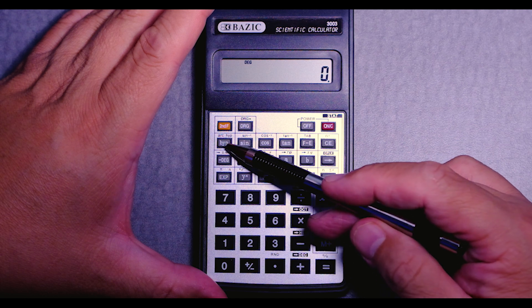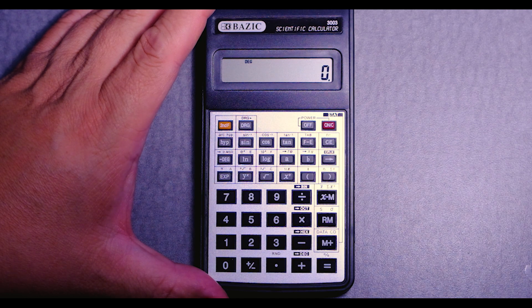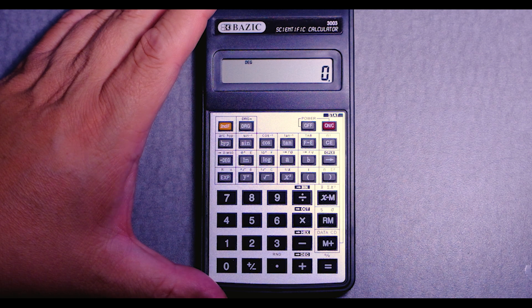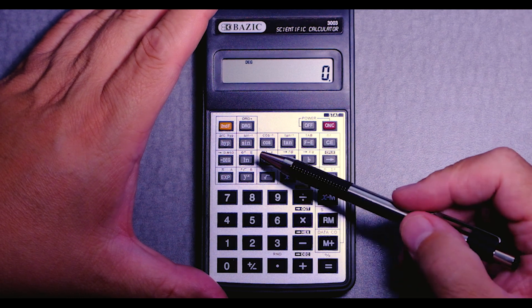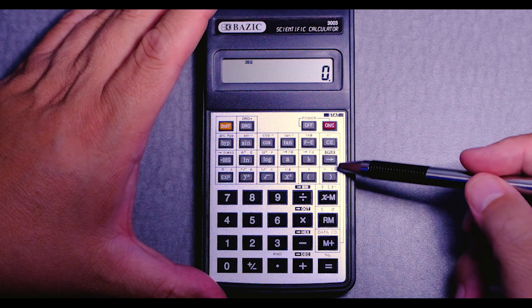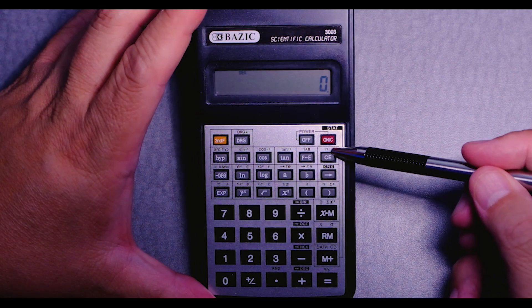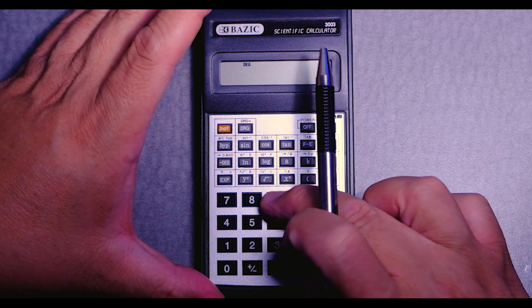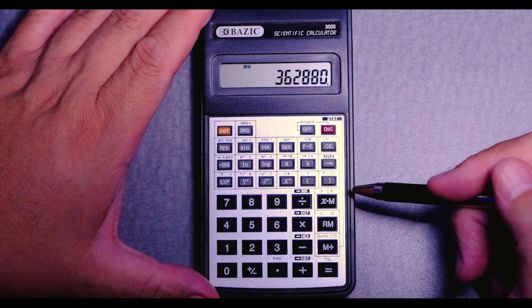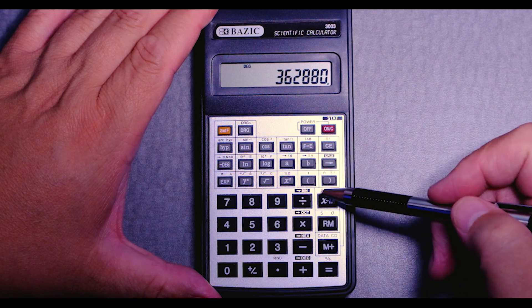And the, what do they call those? The hyperbolic, right? And then you got sine, cosine, tangent, the arcsines. n factorial, that's nice. So if you go 9, and then shift, this button gives you n factorial.